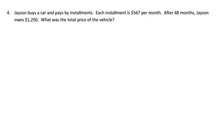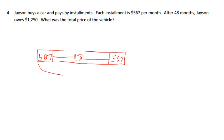Okay, our last problem. Jason buys a car and pays by installments. Each installment is $567 per month. After 48 months, Jason owes $1,250. What is the total price of the vehicle? Well, let's do a tape diagram first so we can make sense of this. I know this one here is $567, so that's his payments, $567. According to this, it says he did 48 of them, so I know this right here would be 567 times 48. And then he said at the end of that he still owed $1,250. And we're looking for total cost of car.